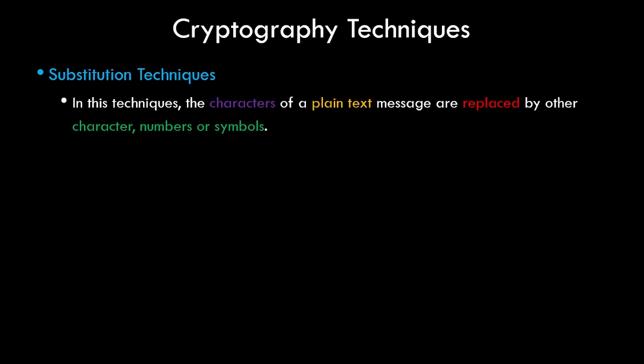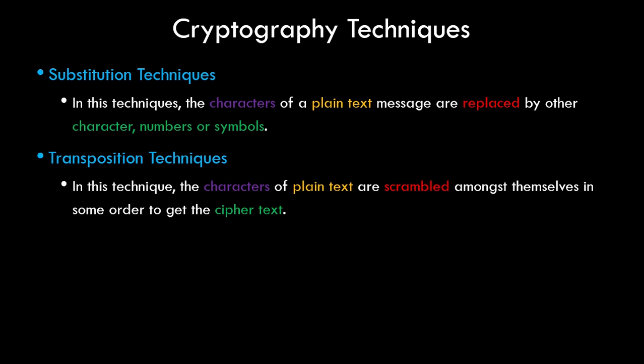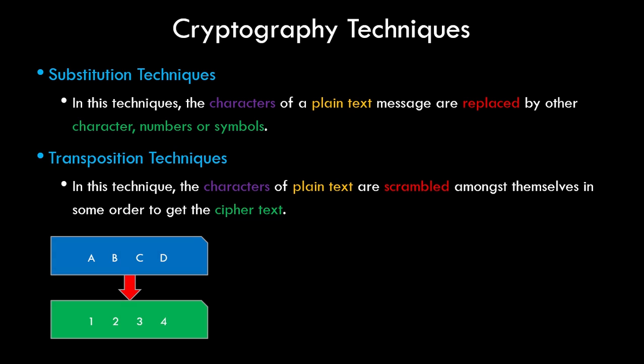Depending on how plain text is converted to ciphertext, there are two techniques. The first is the substitution technique, where characters of plain text are replaced by other characters, numbers, or symbols. For example, the characters A, B, C, D are replaced with numbers 1, 2, 3, 4 — this is an example of substitution, as those characters are replaced by other symbols or numbers.